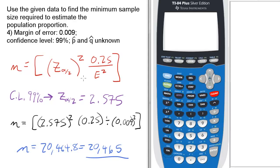divided by e squared. So first thing you need to know is the confidence level of 99% corresponds to a z alpha over 2 score of 2.575. You can find that in the tables or index of the stats book.